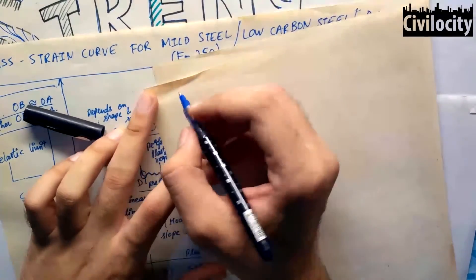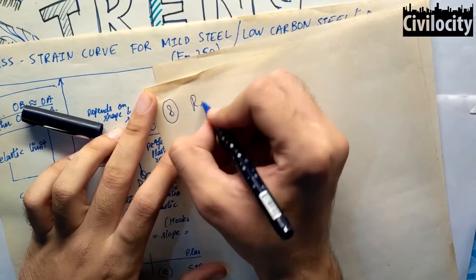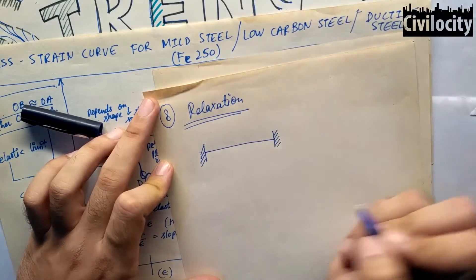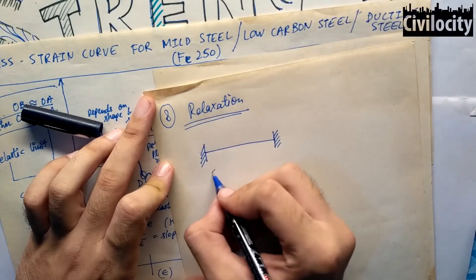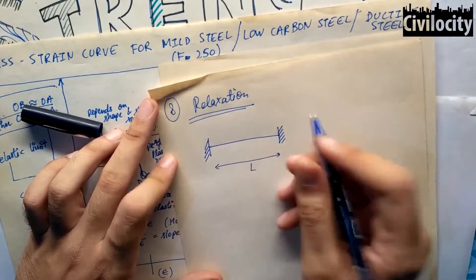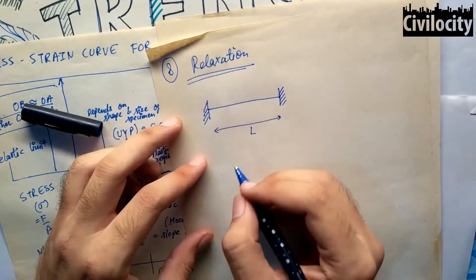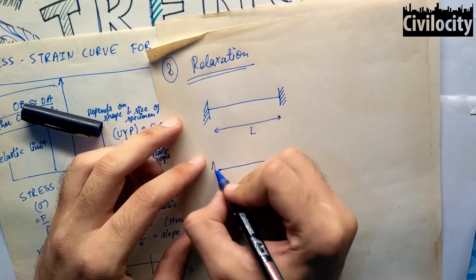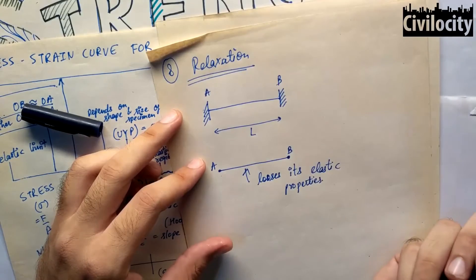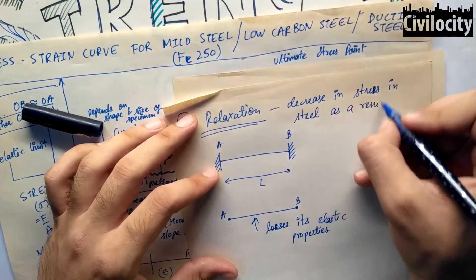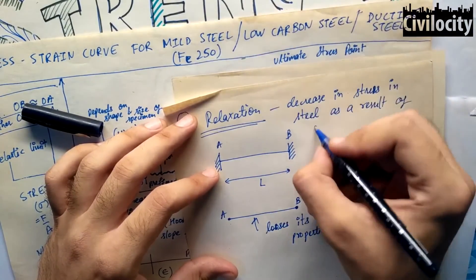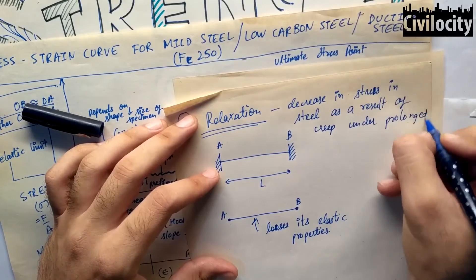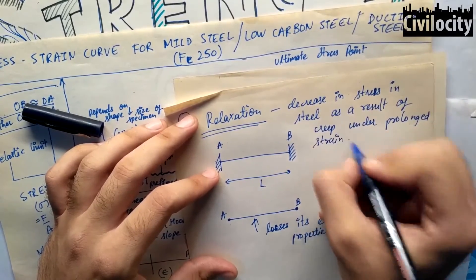Our next topic is relaxation. The decrease in stress in steel as a result of creep under prolonged strain is called relaxation. Over time, the stress will keep reducing and ultimately become constant.